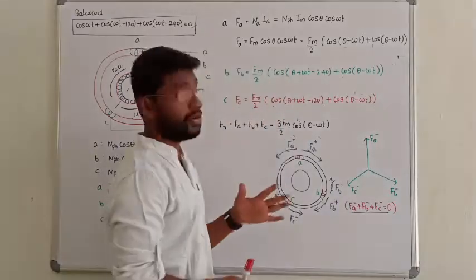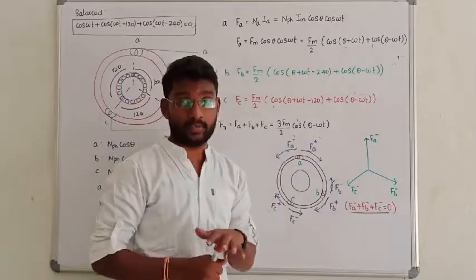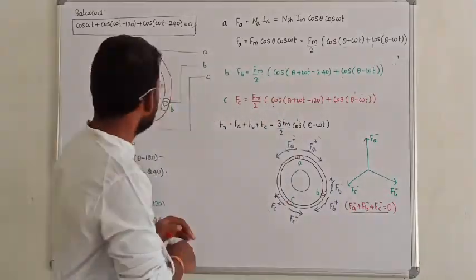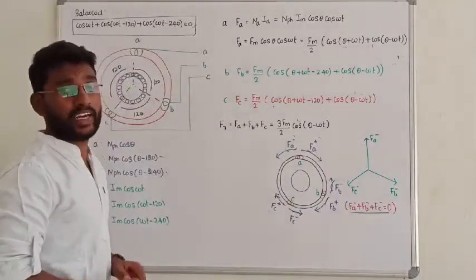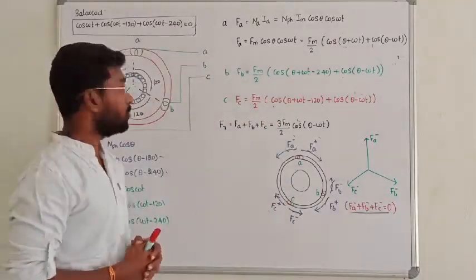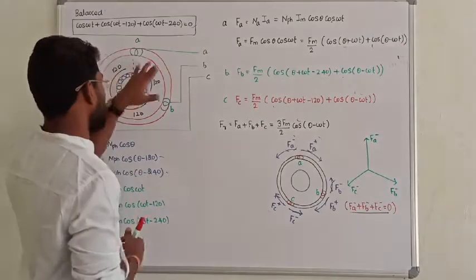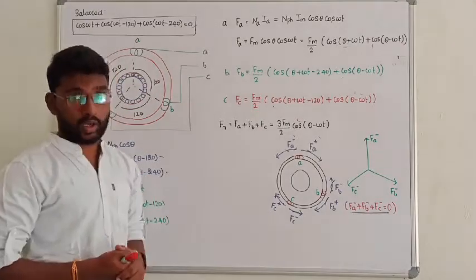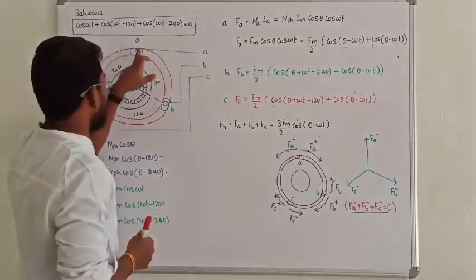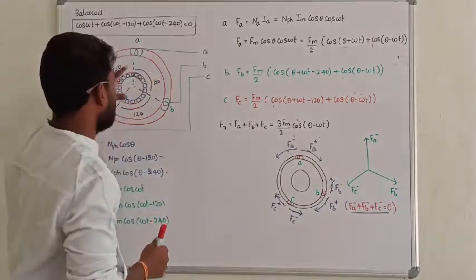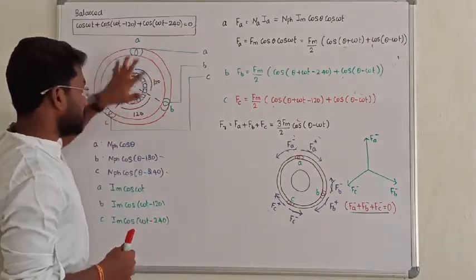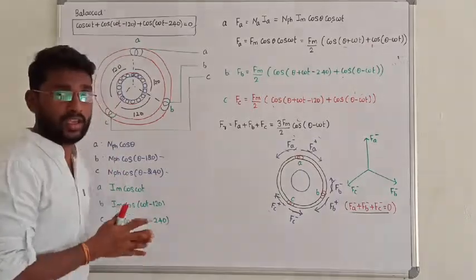Friends, next we are going to start induction machines. Induction machines actually are in two parts — one is the stator, another one is the rotor. The stator has windings put through, that is phase A, phase B, phase C.